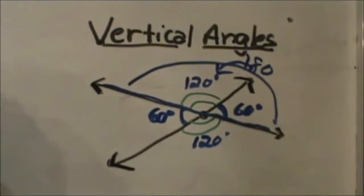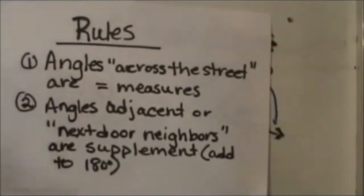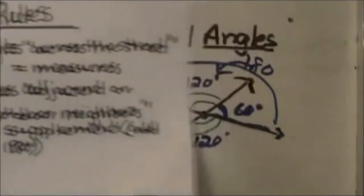They're very simple once you get the hang of them. So let's look at the rules of vertical angles. Angles that are across the street neighbors are congruent, and that's what a vertical angle is - across the street neighbors. Then angles that are adjacent or next door neighbors are supplementary, or they add up to 180. So let's go back to our diagram again.